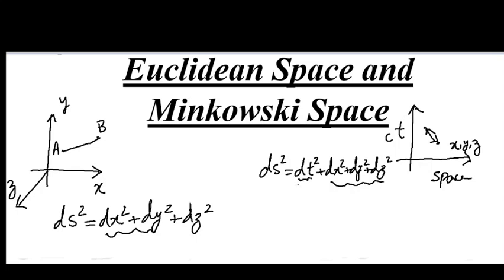Minkowski space is a four dimensional space and we can most generally write it in this form as ds² equals its 0th component squared plus its x¹ component squared plus dx² component squared and dx³ component squared.